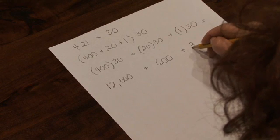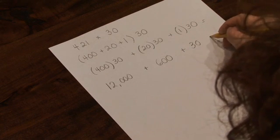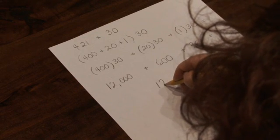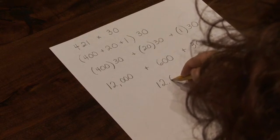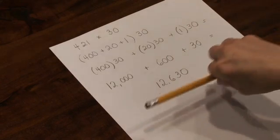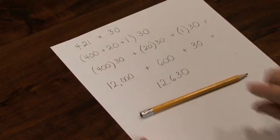1 taken 30 times is 30. So let's add 12,000 plus 600 plus 30, and the answer is 12,630.